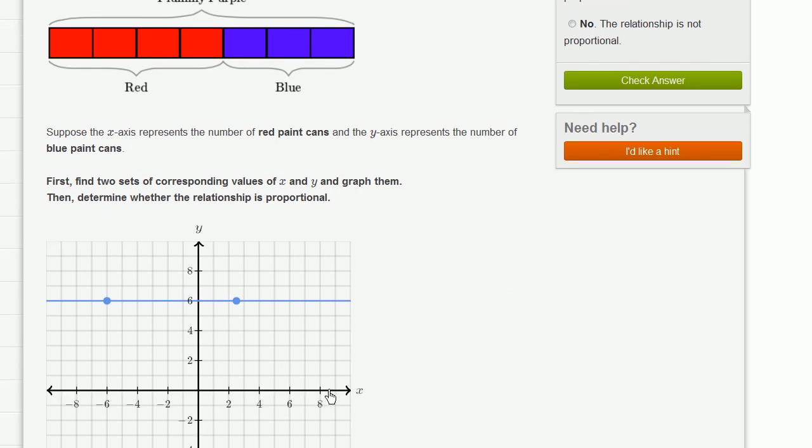So the x-axis is the number of red, the y-axis is the number of blue. First, find two sets of corresponding values of x and y and graph them. Then determine whether the relationship is proportional.